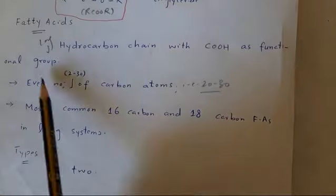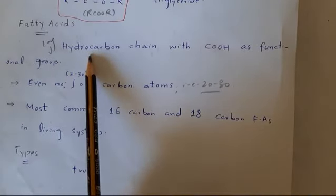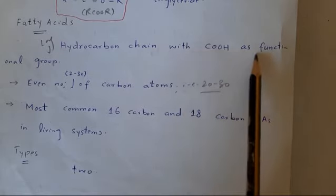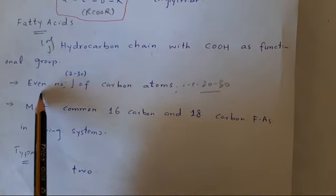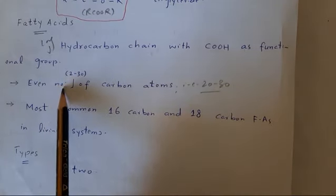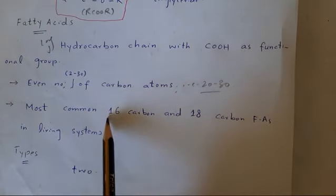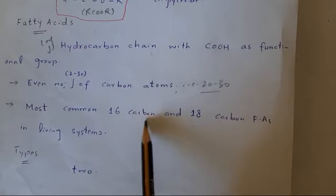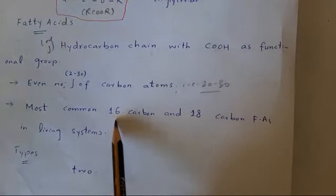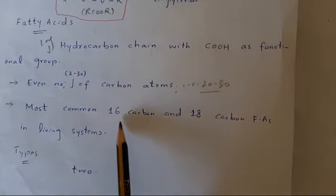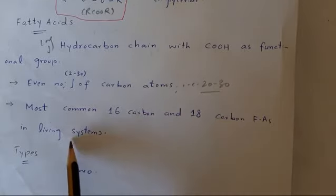Now fatty acids - as we already studied, fatty acids are long hydrocarbon chains with carboxyl group as functional group at one end. The fatty acids have even number of carbon atoms, that is 20 to 30. Most common fatty acids are 16 carbon and 18 carbon in living systems.